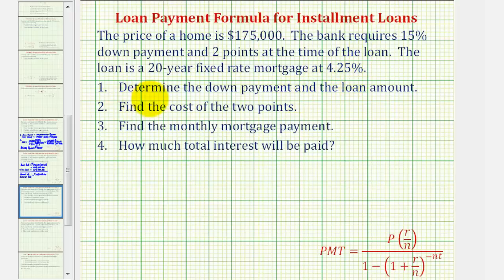Number one, we want to determine the down payment and the loan amount. Number two, we want to find the cost of the two points. Number three, find the monthly mortgage payment. And number four, how much total interest will be paid over the life of the loan.